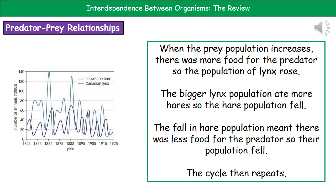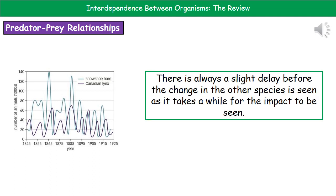When looking at why predators decrease as prey decrease, we mention that there is less food available so they are going to starve. So if it's a describe question, just say what you see. If it's an explain question, say what you see and why, using science. The reason we get this slight delay between the change in one population and the change in the other is because it takes a while for that impact to be seen — if prey numbers drop, it takes a while for that lack of food to result in the death of predators.